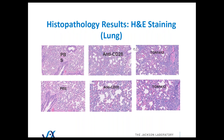This is the infiltration in the lung, at two magnifications, with PBS, anti-CD28, and TGN1412 analog. As you can see, we have high levels of infiltration in the lungs — very high infiltration of immune cells into the lung — and it's drug-related.